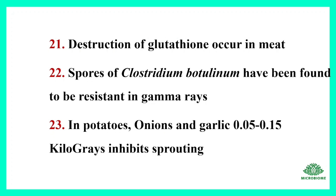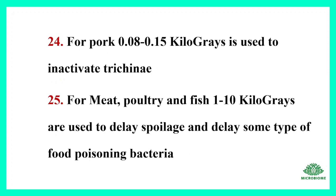Destruction of glutathione occurs in meat. Spores of Clostridium botulinum have been found to be resistant to gamma rays. In potatoes, onions, and garlic, 0.05 to 0.15 kilograys inhibit sprouting.